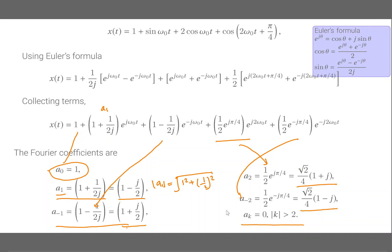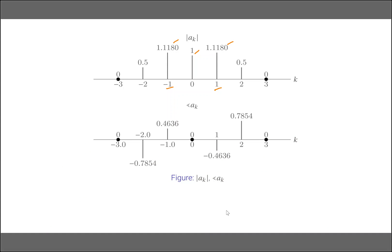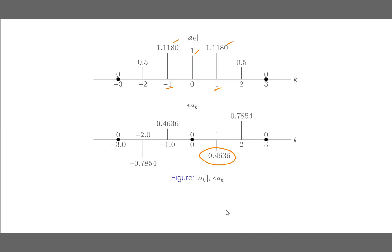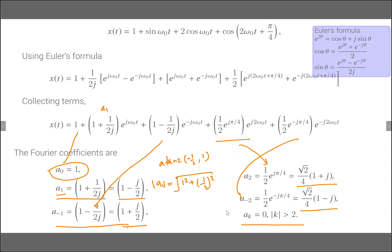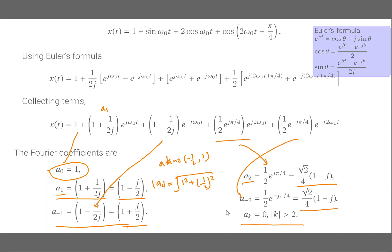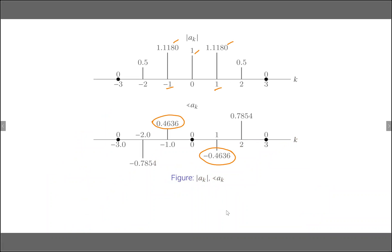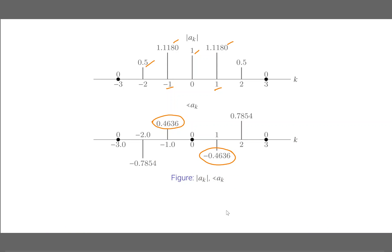The magnitude of A_{-1} is the same as A_1, approximately 1.1180. Computing the angles: the angle of A_1 is arctan(minus 1/2 over 1), giving approximately minus 0.4636 radians, and the angle of A_{-1} is plus 0.4636 radians. For A_2, the magnitude is 0.5 and the angle is π/4. We have now plotted the Fourier series coefficients using the magnitude plot and phase plot.